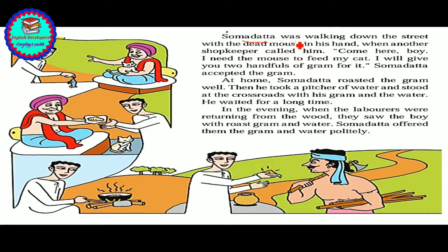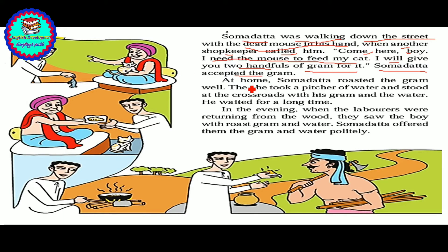Then Somdatta was walking down the street with the dead mouse in his hand. That's when another shopkeeper called him. 'Come here boy, I need the mouse to feed my cat. I will give you two handfuls of grams for it.' Somdatta accepted the grain.